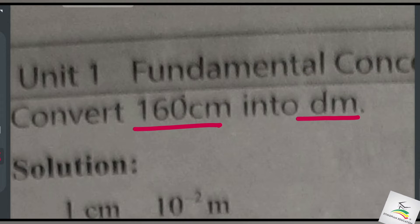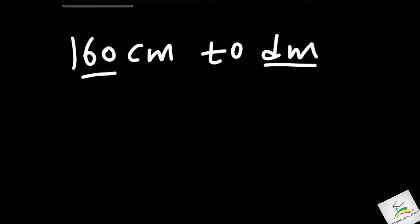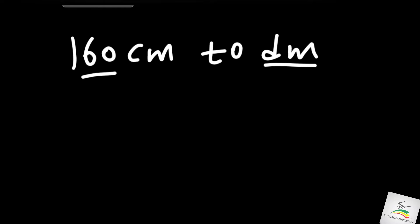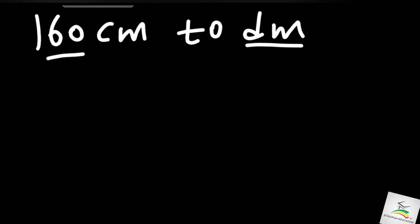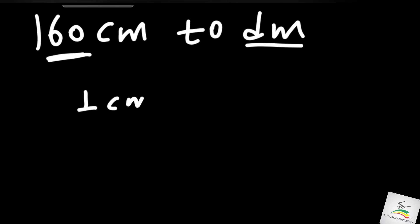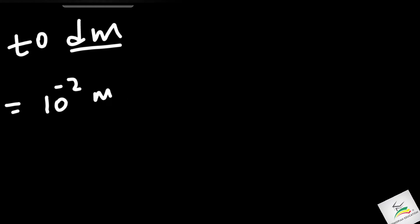Let's convert 160 centimeters into decimeters. We know 100 centimeters equals 1 meter, and 10 decimeters equals 1 meter. We write down 1 centimeter and 1 decimeter in terms of meters using their definitions.